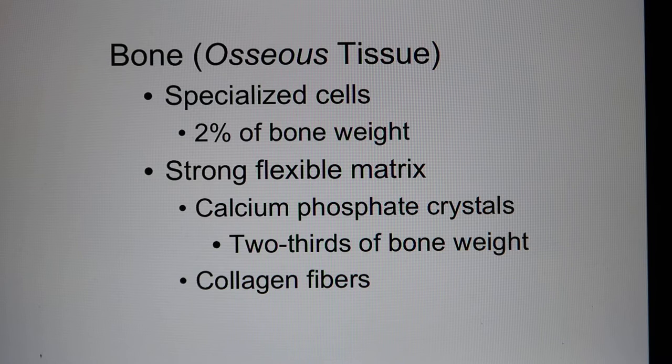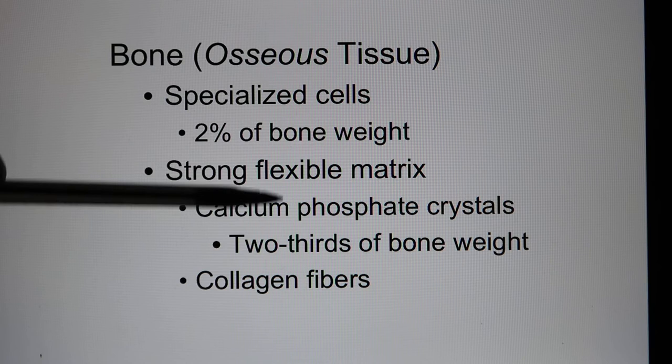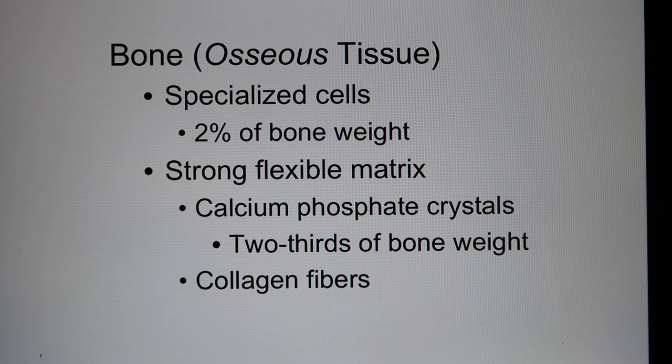Bones have specialized cells. In the bone, only 2% are bone cells; the other 98% is bone matrix. In the bone matrix, you find calcium — calcium is the main component, specifically calcium phosphate. Two-thirds of the bone weight comes from calcium. You also have collagen fibers, which give your bone some flexibility.